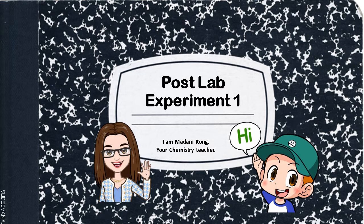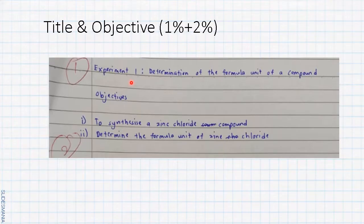Let's start with post-lab experiment 1 first. Last week we did experiment 1, determination of the formula unit of a compound. Now let's discuss the lab report. First you must write the title and objective. The title of experiment 1, just copy from the lab manual exactly: determination of the formula unit of a compound, so you get one mark.